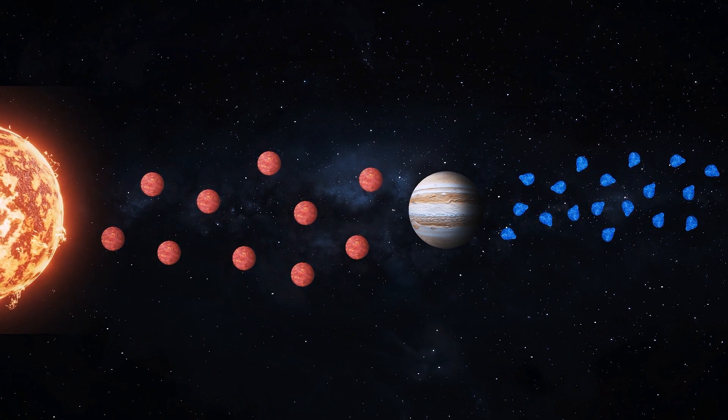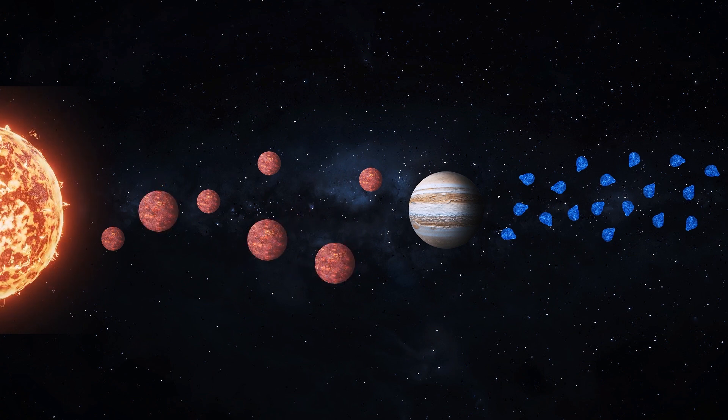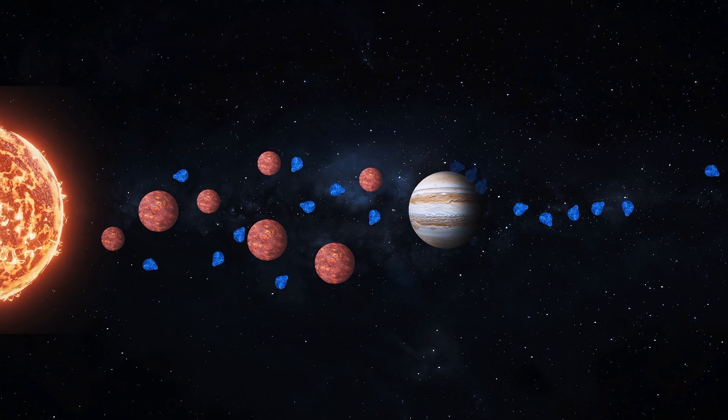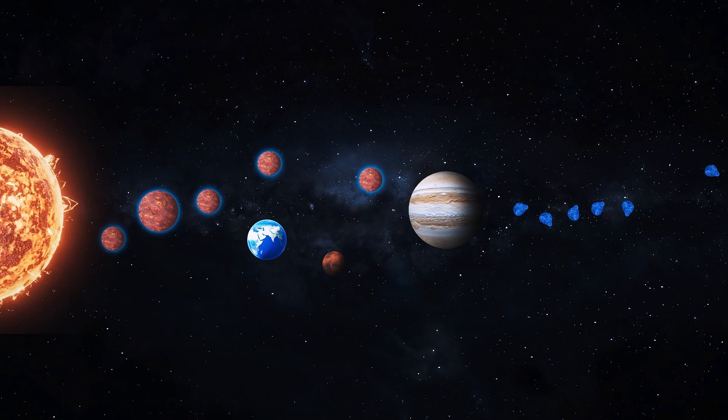However, the new study found the classical model to be more likely, which involves collisions between moon-to-Mars-sized planetary embryos after the gas disk had dissipated. Here, only 4% of both Earth and Mars was made up of materials from the outer solar system.